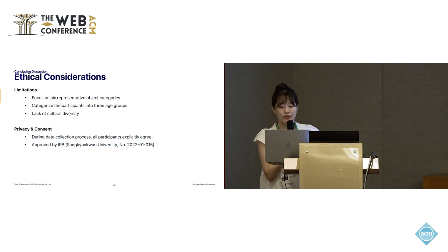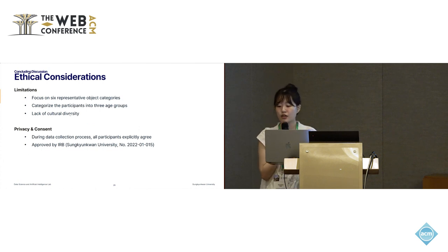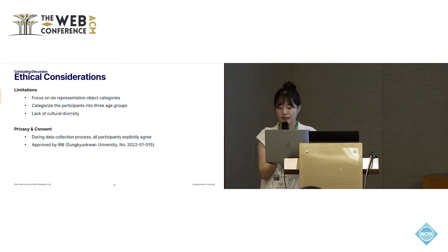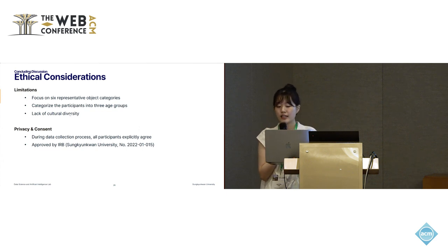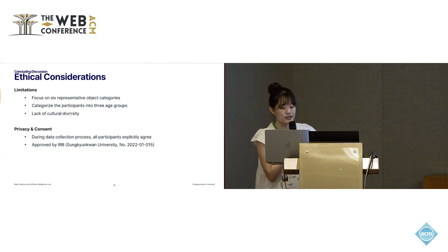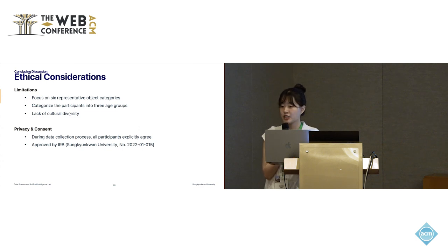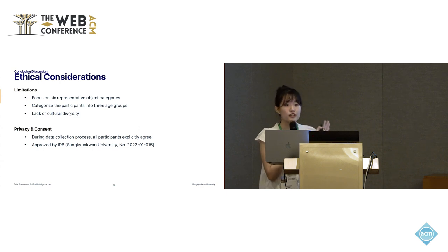However, there are some limitations of our paper. First, we focus on only six representative object categories that are mostly analyzed in the DAPR assessment. Second, we categorized participants into three age groups and collected data based on those groups; users of our dataset should keep in mind that we might have missed potential drawing patterns not captured under these criteria. Lastly, since there is currently no existing scene-level sketch dataset encompassing age diversity, Scene-DAPR may not fully capture the diversity of cultural backgrounds, which can impact drawing styles and object perceptions.